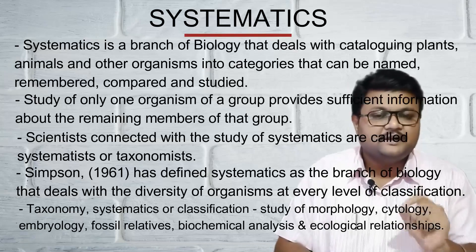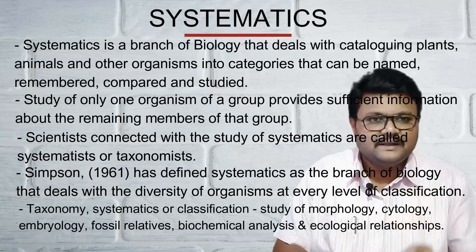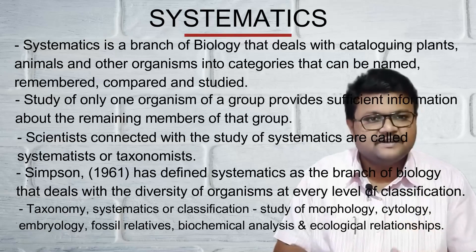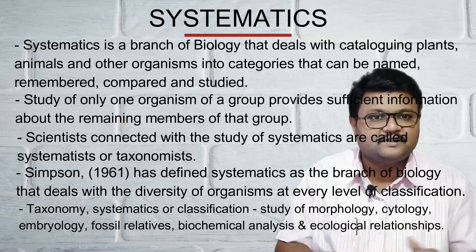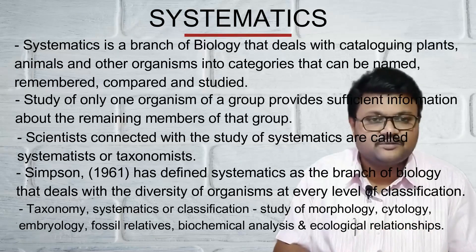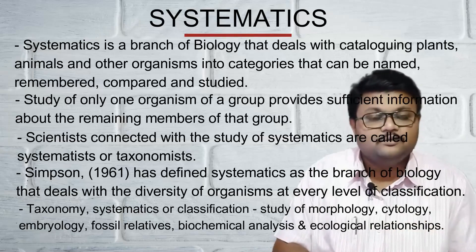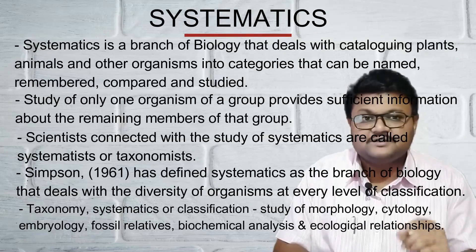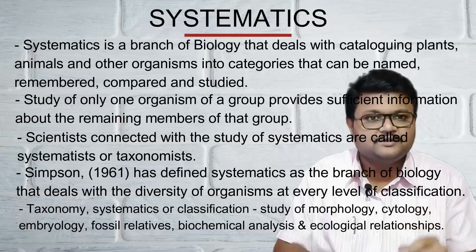In general, systematics, classification, and taxonomy have got synonymical meanings or definitions. But if you go a little deeper, we can understand there are some more characteristics present in each of these three different groups. Simpson defined systematics as a branch of biology that deals with the study of organisms at every single possible individual level.